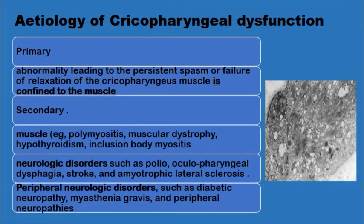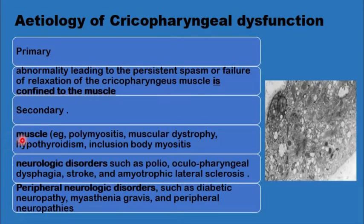The etiology of the dysfunction can be primary, when it is confined to the cricopharyngeal muscle alone, or secondary, when there is a generalized affection of muscles and nerves elsewhere in the body. It can be a generalized muscular problem like polymyositis, muscular dystrophies, hypothyroidism, inclusion body myositis, or neurological disorders such as polio.